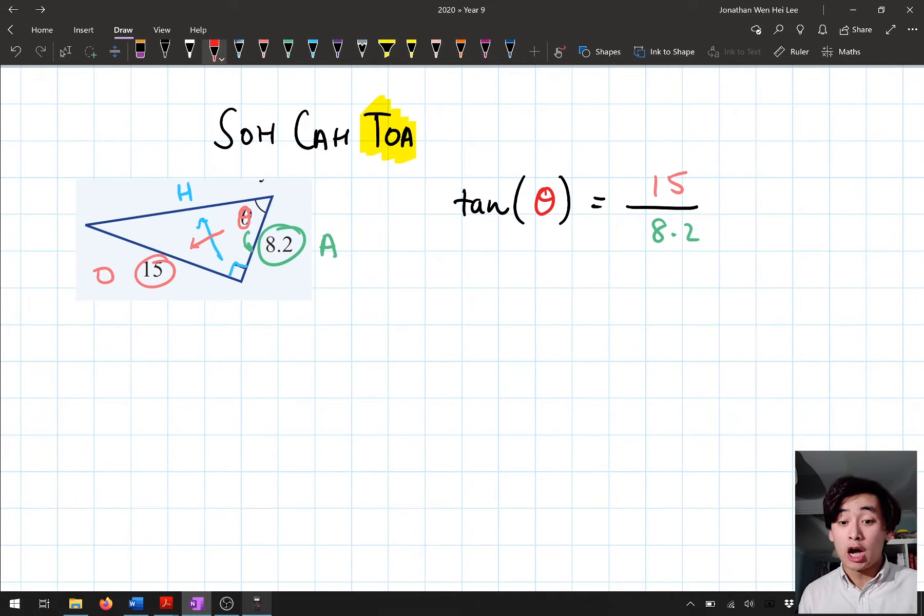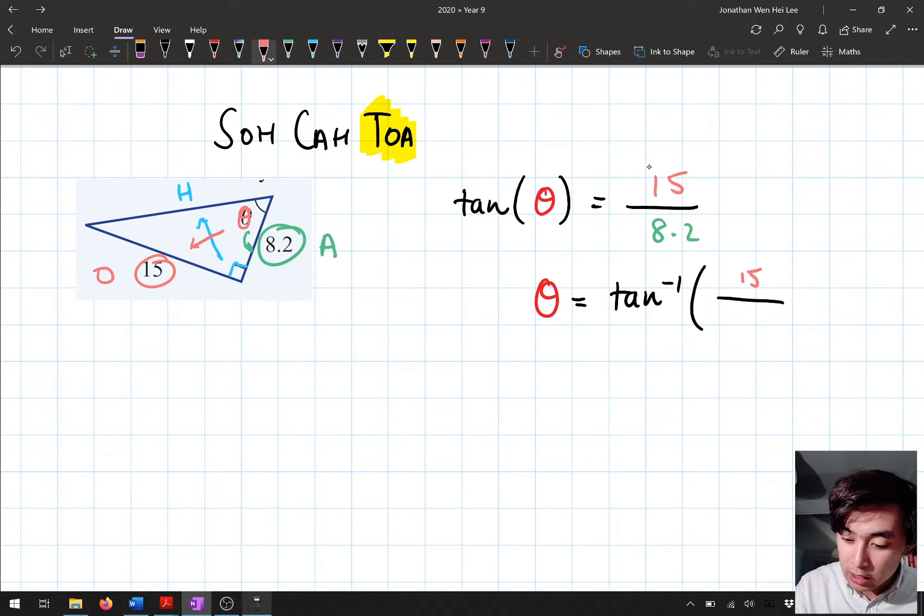Next step after that is I want to undo tan. I use inverse tan or inverse trig. So here, theta is going to be equal to tan inverse. And what do I put into inverse trig? My ratio. So here, I'm going to put in my fraction 15 over 8.2. So there we go.